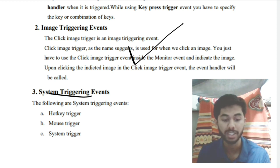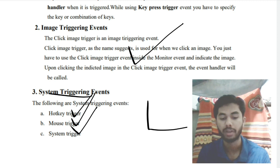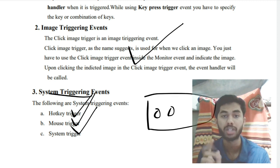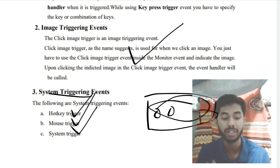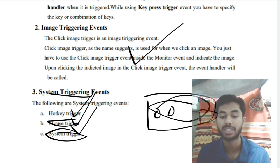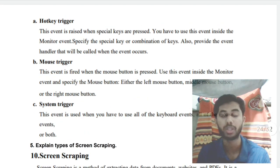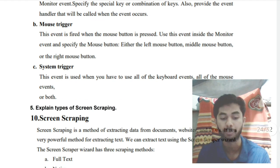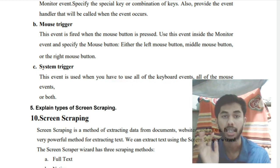For System Triggering Event, there are three subtypes: Hotkey Trigger, Mouse Trigger, and System Trigger. Hotkey Trigger uses modifier keys — Alt, Shift, Ctrl, Win — combined with a key to trigger an action. Mouse Trigger uses mouse actions like click, double click, or hover. System Trigger encompasses all system activities, including both mouse and keyboard events together.